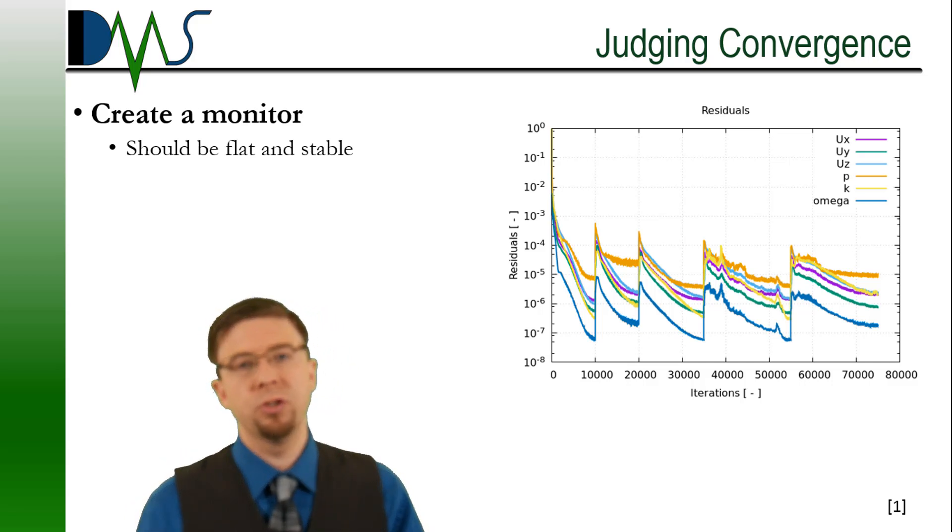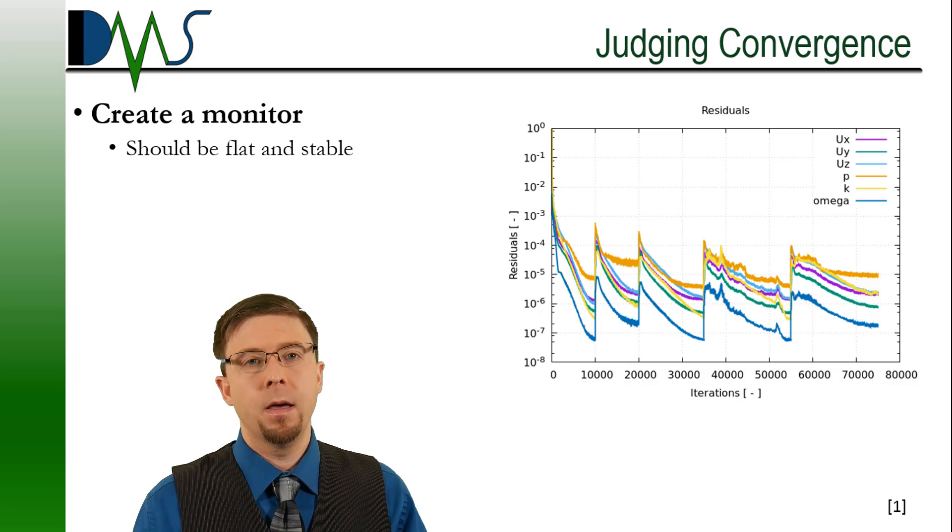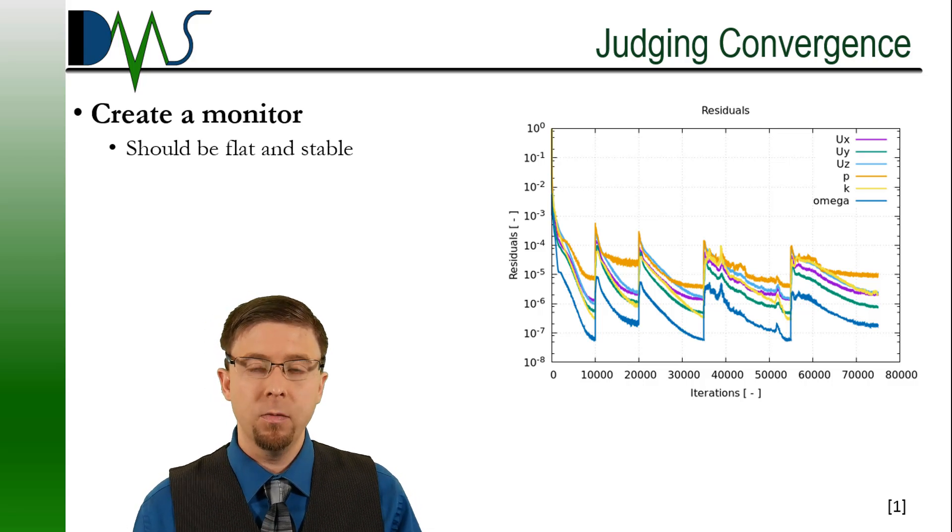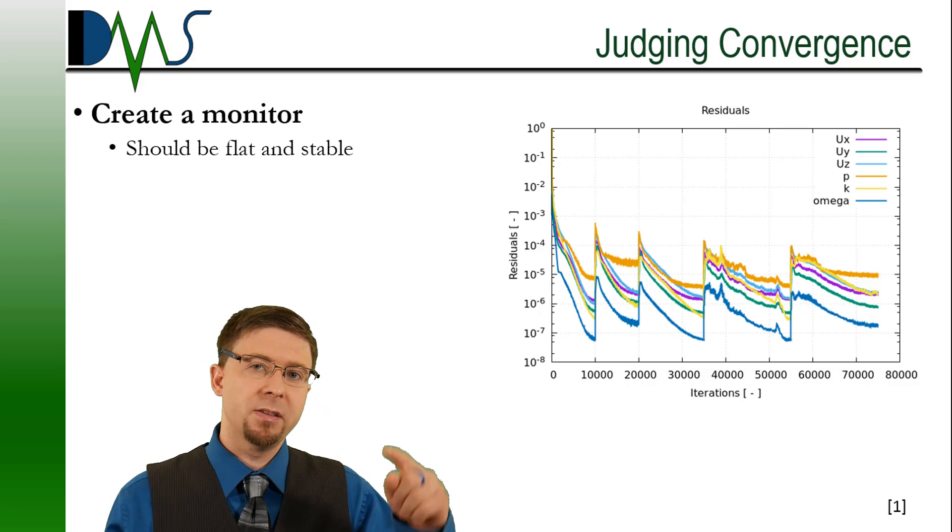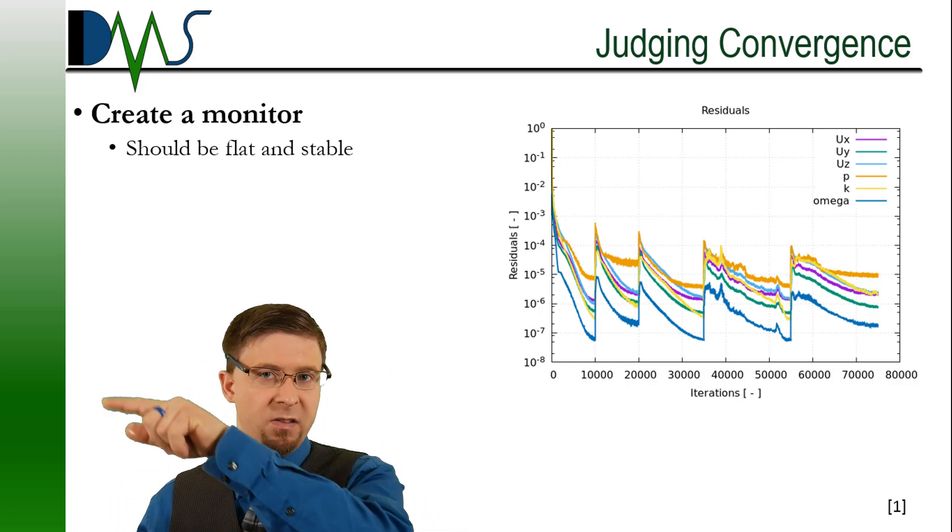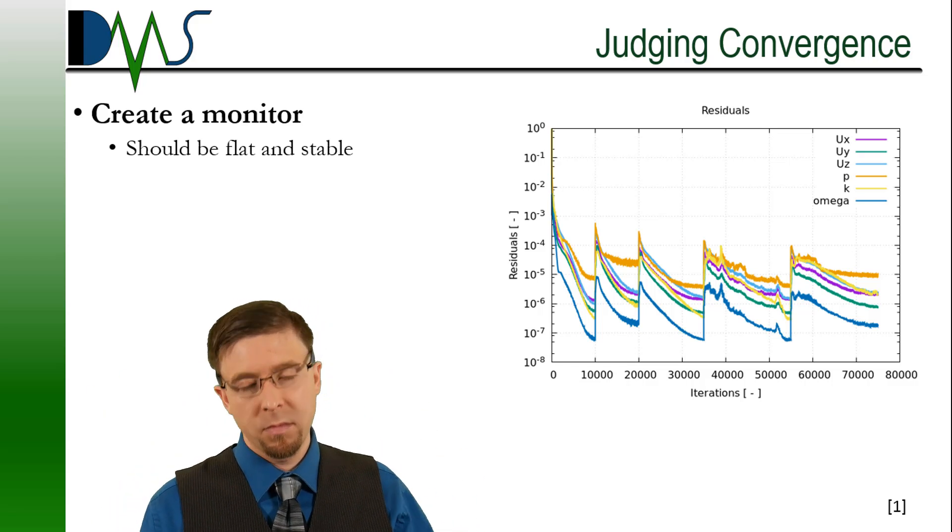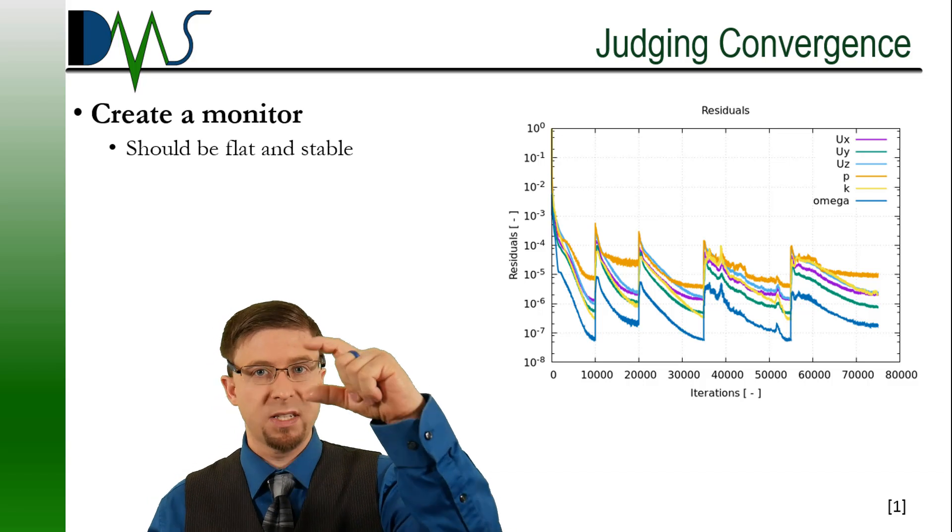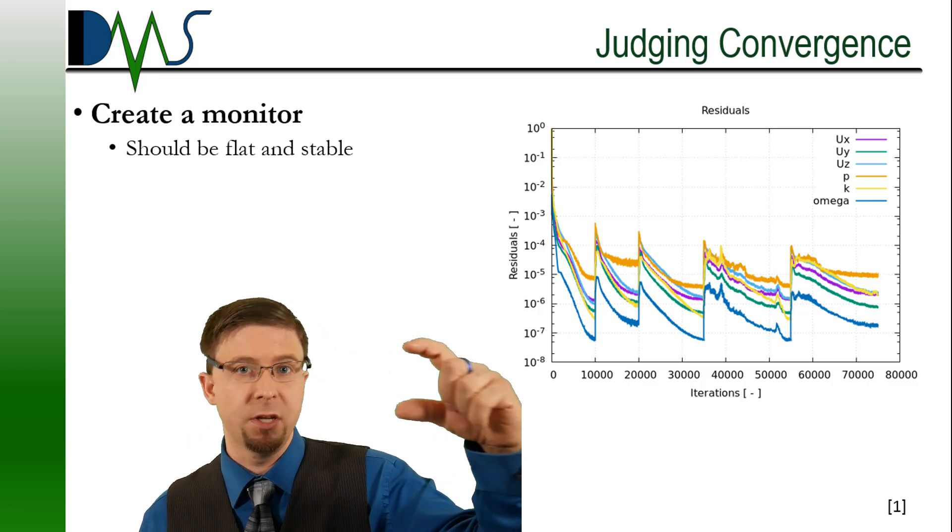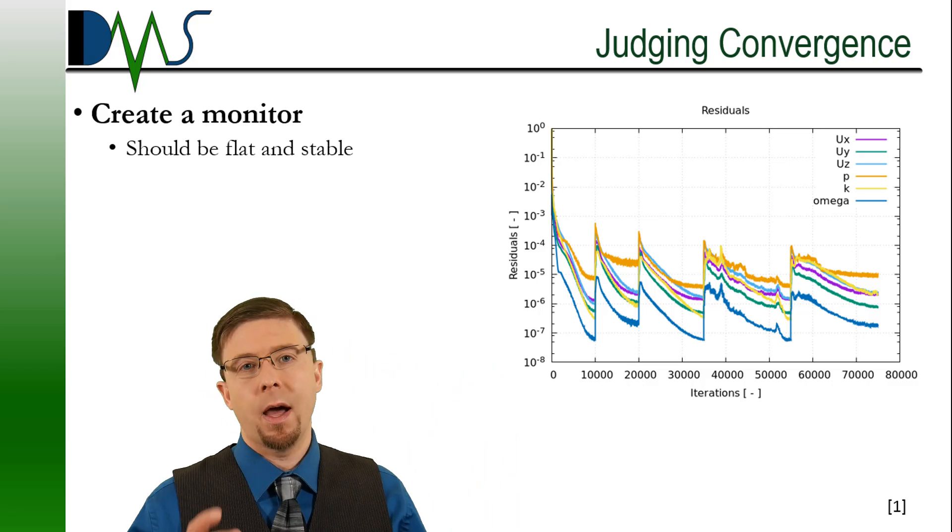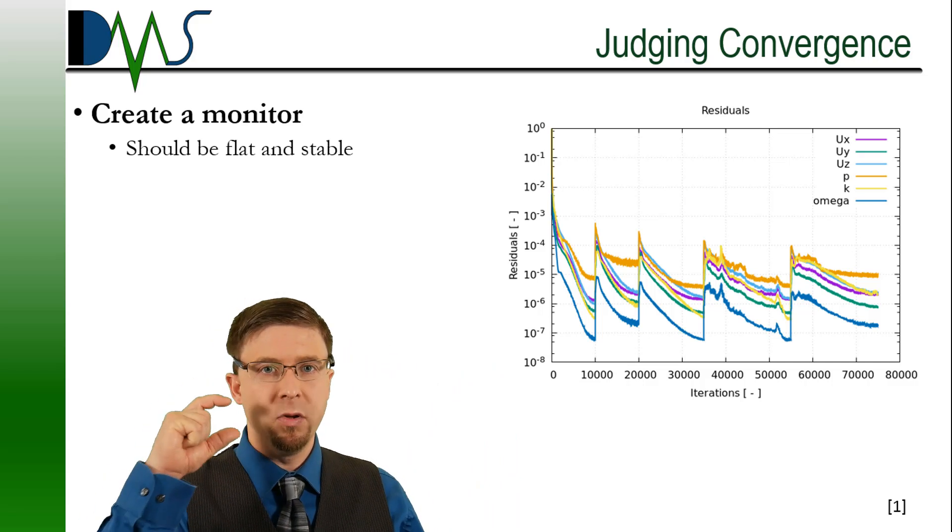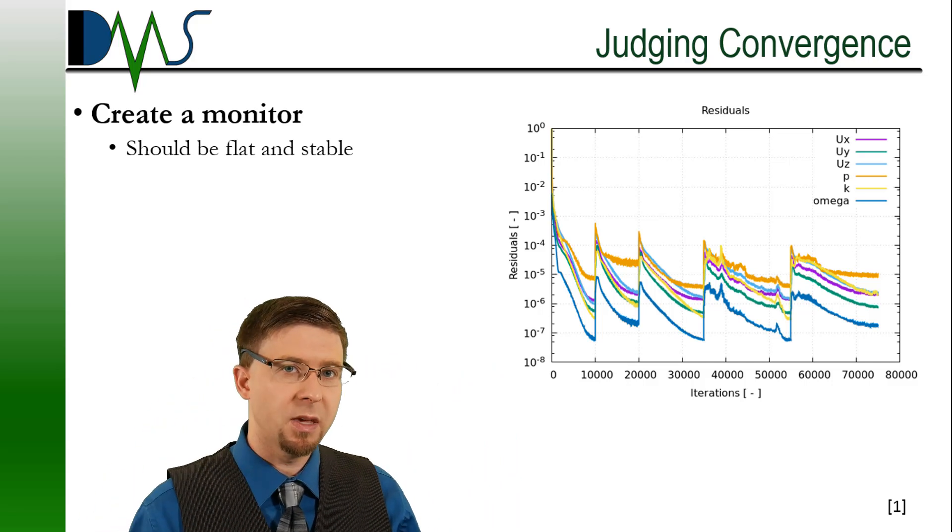Sometimes it won't actually turn into a flat stable value. It might actually become a periodic value. What I mean by that is that it will keep oscillating in a nice steady period back and forth. That's okay too, but it should be a stable period. It shouldn't keep bouncing all over the place. It should be a predictable pattern. Either way though, we're looking for a stable trend here. Stable is the key part.